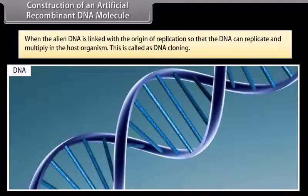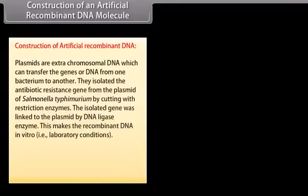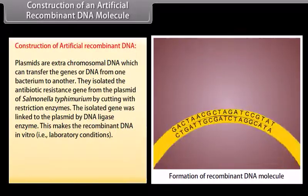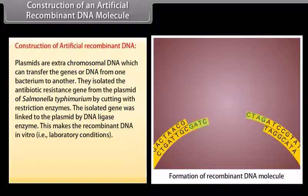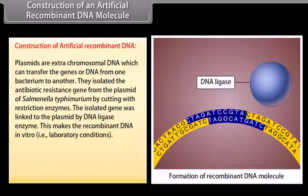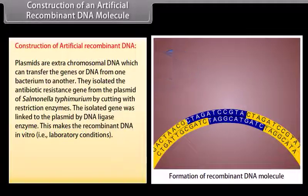Construction of an artificial recombinant DNA molecule. When the alien DNA is linked with the origin of replication so that the DNA can replicate and multiply in the host organism, this is called DNA cloning. Plasmids are extra-chromosomal DNA which can transfer genes or DNA from one bacterium to another. They isolate the antibiotic resistance gene from the plasmid of Salmonella typhimurium by cutting with restriction enzymes. The isolated gene was linked to the plasmid by DNA ligase enzyme, making recombinant DNA in vitro.